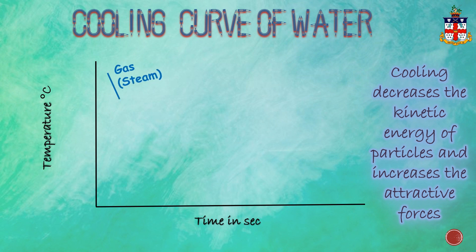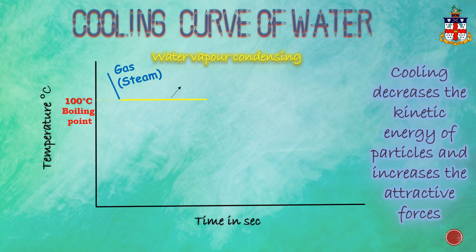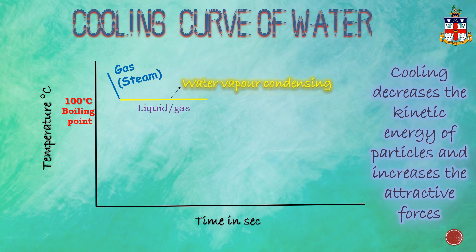The temperature at this constant point is 100 degrees centigrade — the boiling point of water. During this time period, the water vapors are condensing, so both the liquid and gaseous states co-exist at this temperature. A sudden decrease in temperature then shows that all the vapors have been converted into liquid state.